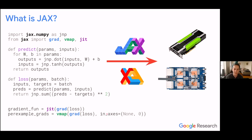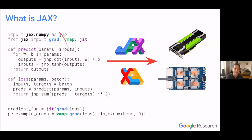This is the final slide before we hopefully get the demo working. Here's a quick overview of what JAX looks like. If you've used NumPy before, this might look familiar. Here in the middle we're defining a fully connected neural net and a matching loss function. The difference is that instead of using NumPy, we're using jax.numpy, which we're going to call JNP.